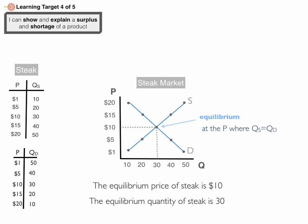That equilibrium quantity, in equilibrium, is both quantity supplied and quantity demanded. So here, 30 steaks are going to be made and 30 steaks are sold.